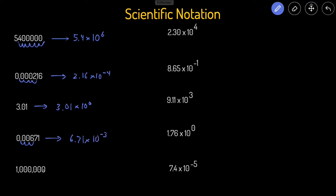How about this next one — is this number greater than one or less than one? It's a lot bigger than one, so we expect a positive exponent. We want to move the decimal point, and counting it out: one, two, three, four, five, six — so this would just be 1.0 times 10 to the sixth power.